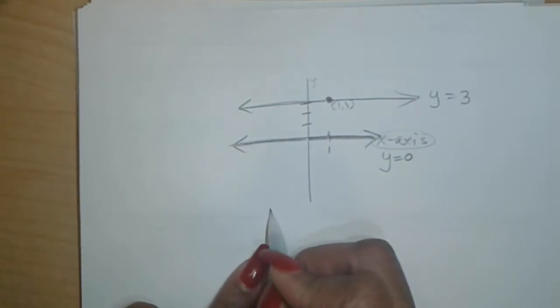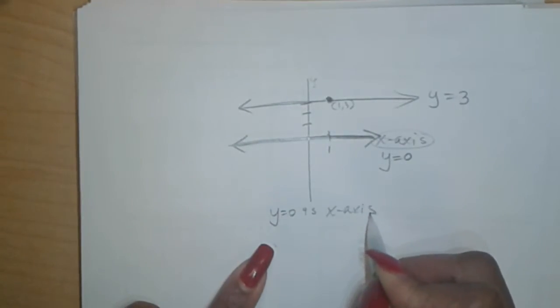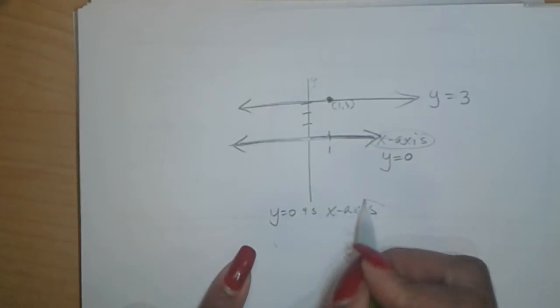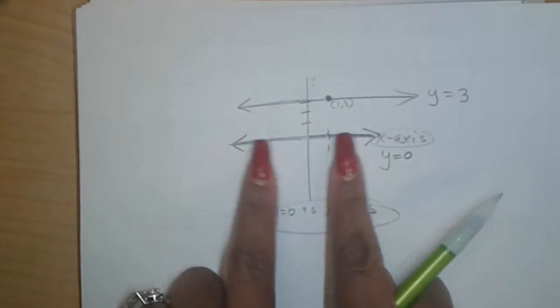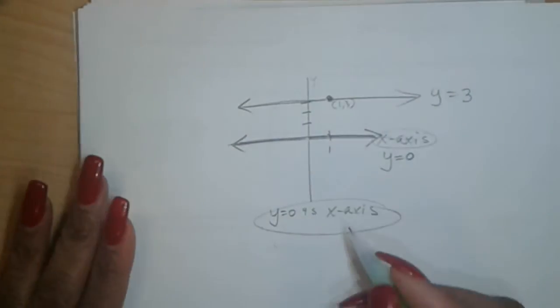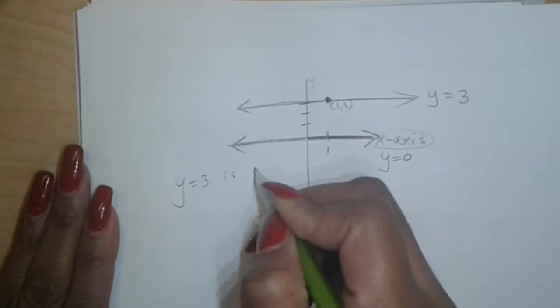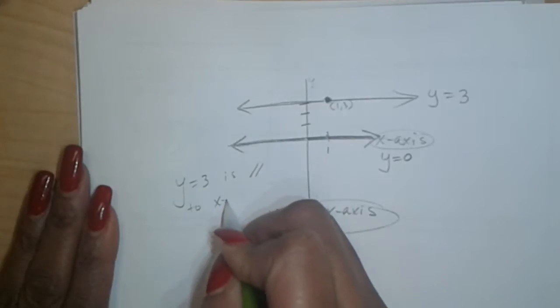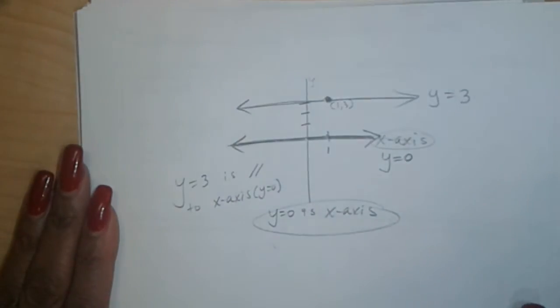So y equals zero is the x-axis. And the line that is parallel to this situation, this graph here, is y equals 3. Okay? So the answer to that would be y equals 3 is parallel, that's the parallel symbol you'll use in geometry, to the x-axis, better known as y equals zero.